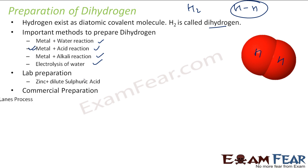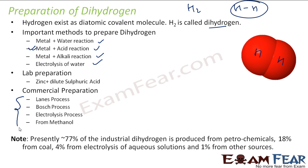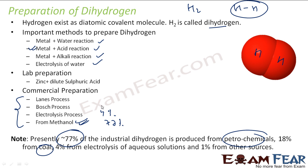In the commercial way, we have the Lenz process, the Bosch process, the electrolysis process, and we also prepare hydrogen from methanol. Hydrogen is commercially used widely, so we have different processes for maximum efficiency. About 77% of industrial hydrogen is produced from petrochemicals, 18% from coal, and only 4% from electrolysis.